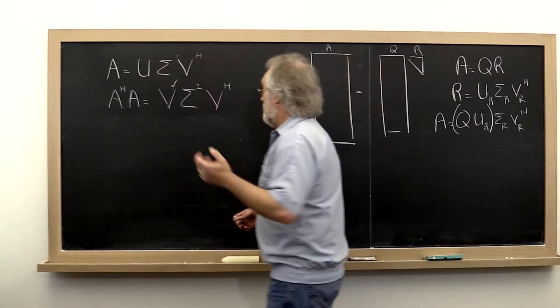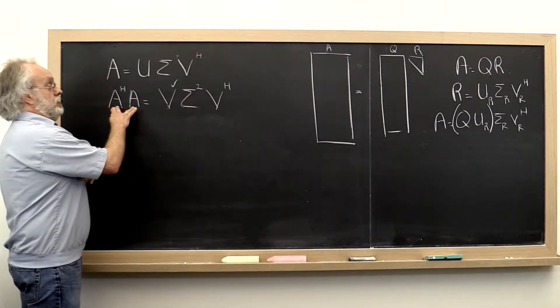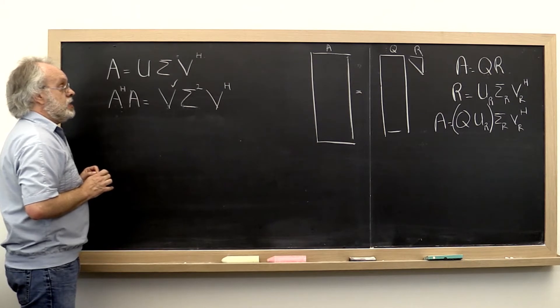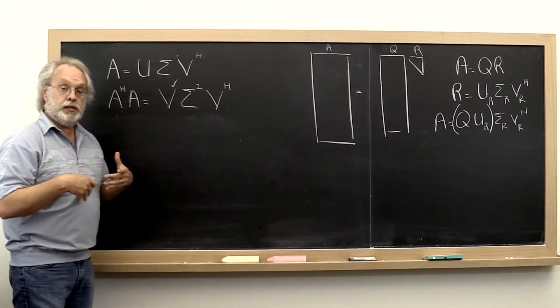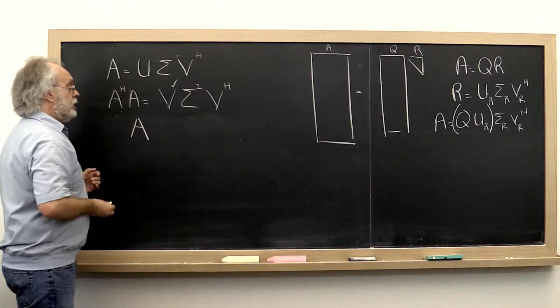Well, we don't want to form A Hermitian A. What we're going to see in the next unit is that you can take a matrix A and you can compute unitary matrices Ua and Va such that the resulting matrix is bidiagonal.